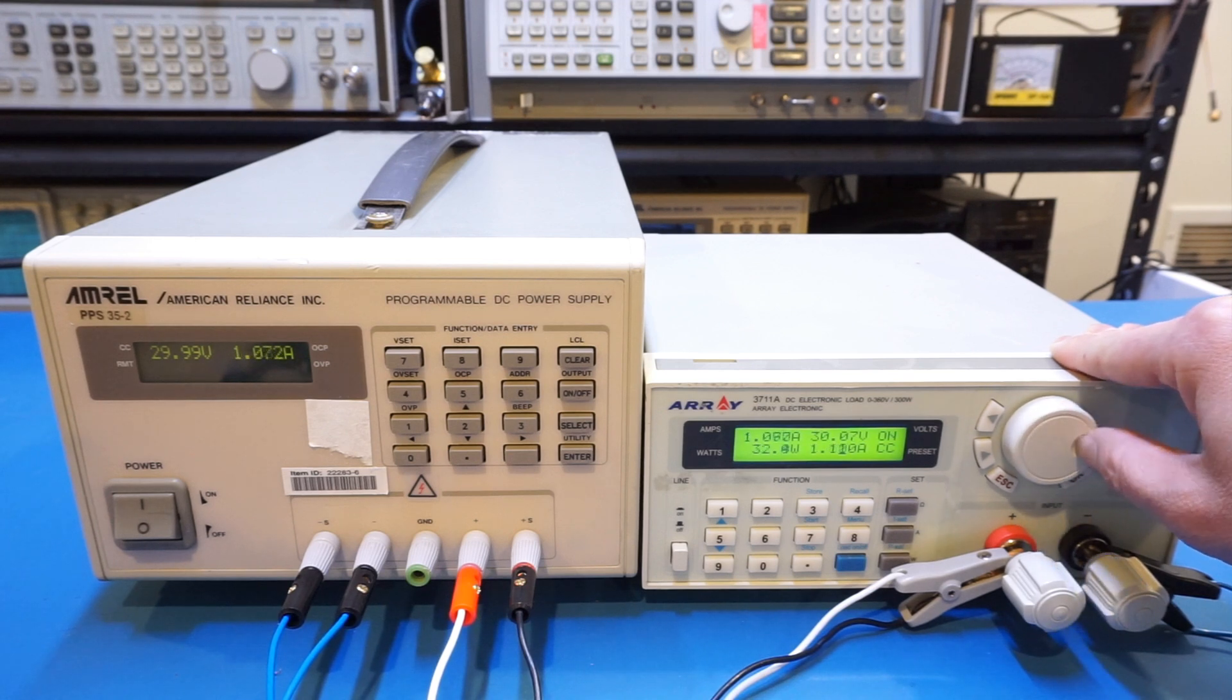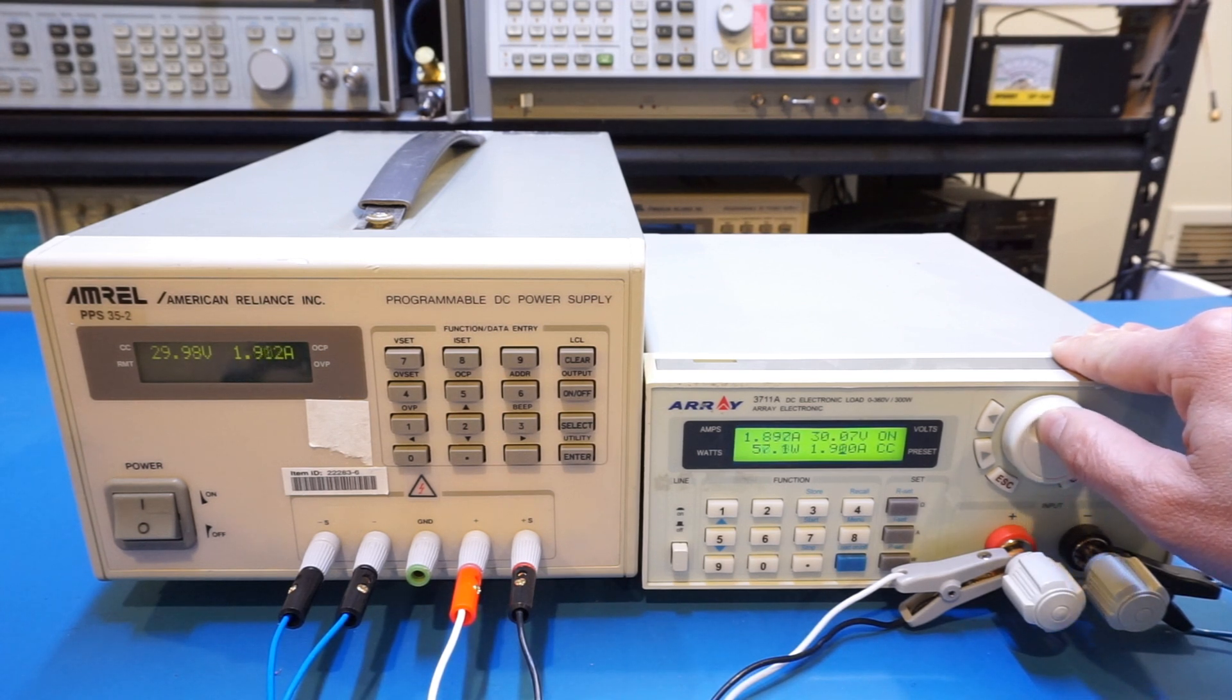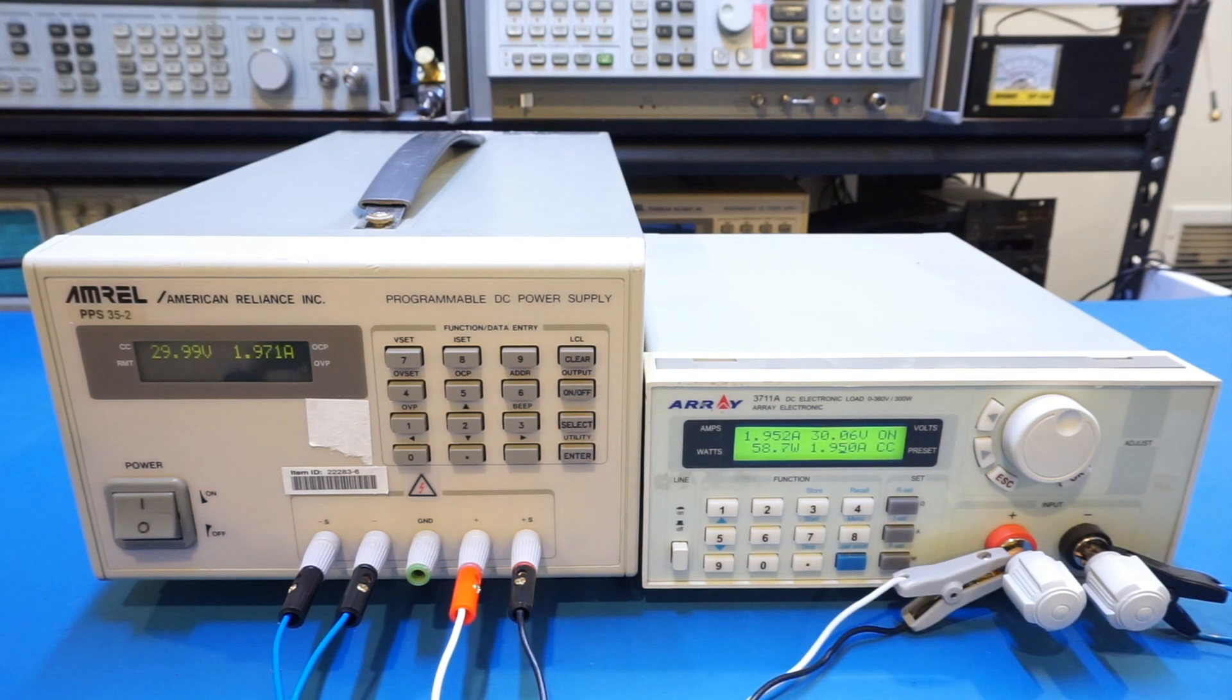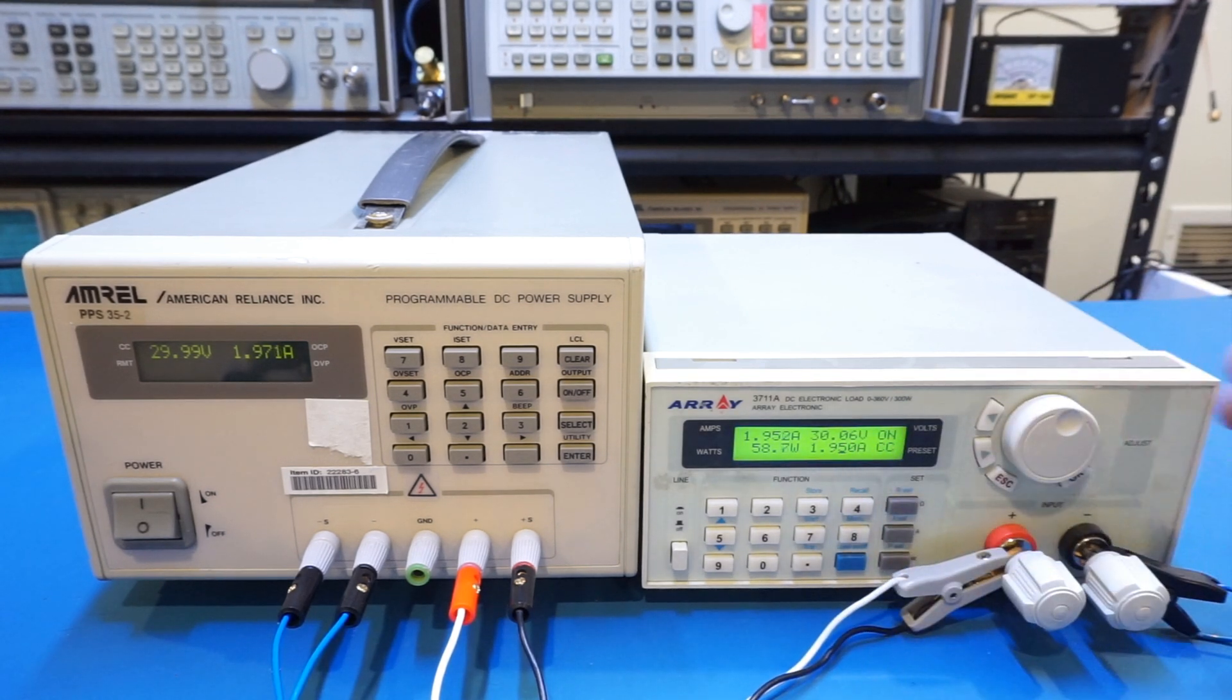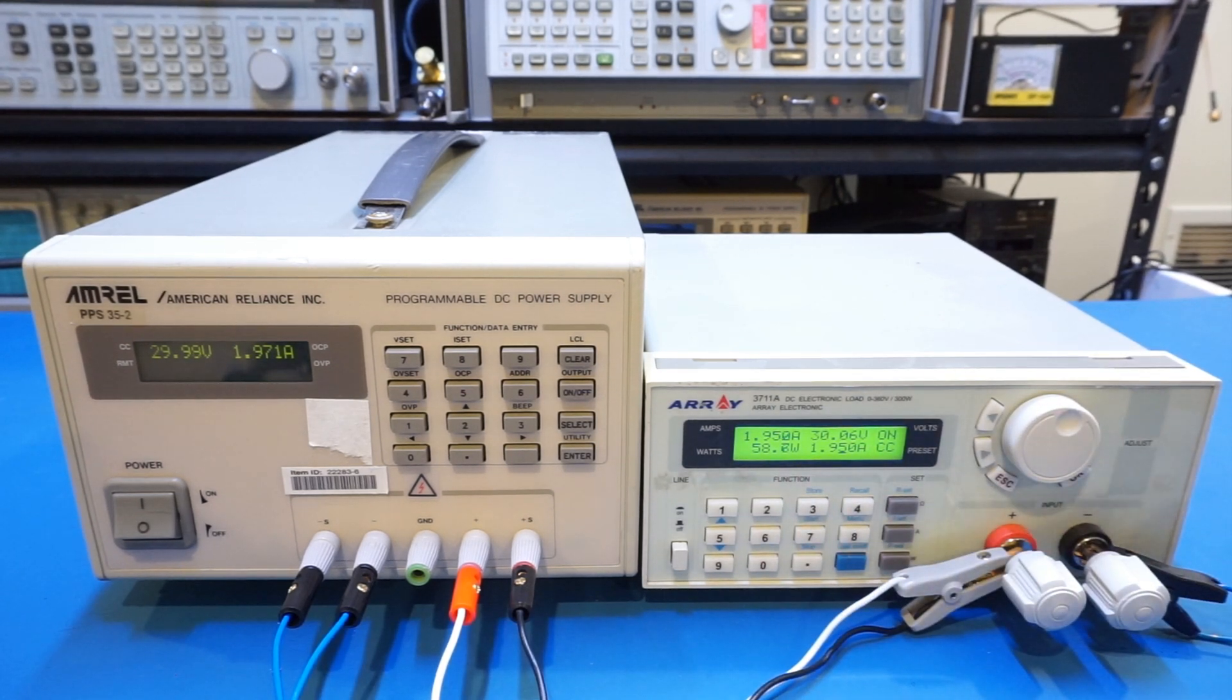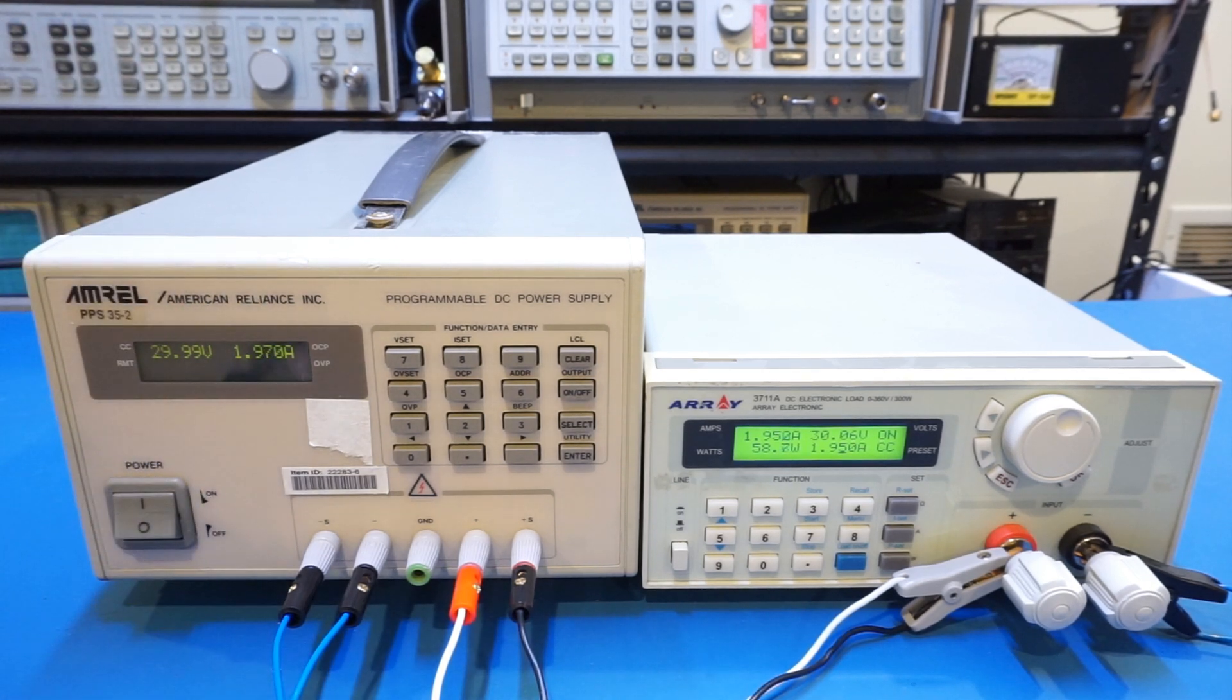Now we set it to 30 volts. It's oscillating a little bit and I suspect the reason is that we are not drawing any current yet. Let's start drawing some current on our load. You can see the output voltage at the load side remains at 30.07 volts and it really hasn't changed. That's a good sign. Let's crank it all the way up to about 1.95 amps. As you have observed, the output voltage at the load side remains 30.06 volts as measured by this electronic load. That's the beauty of remote sensing.